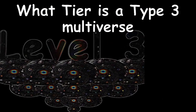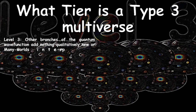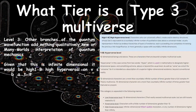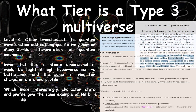Now we are on to a Type 3 multiverse — the many-worlds theory interpretation of quantum mechanics. Given that this is infinite dimensional, it would be High 1B, High Hyperversal on Versus Battle Wiki, and the same is true for character stats and profile. Character stats and profile actually give the same description of Hilbert space being infinite dimensional as Tegmark's original paper.